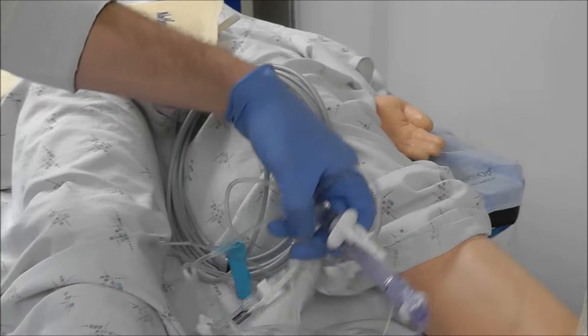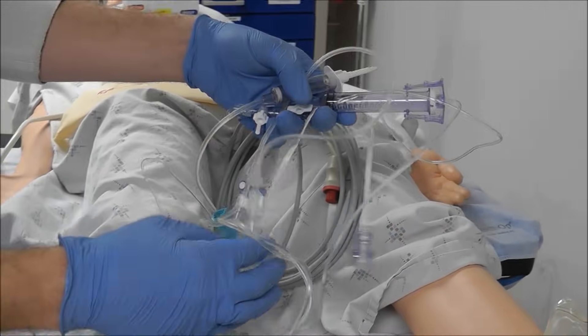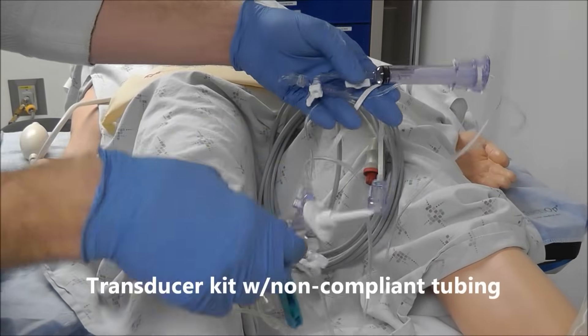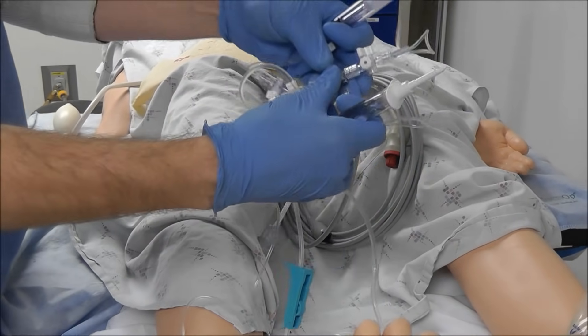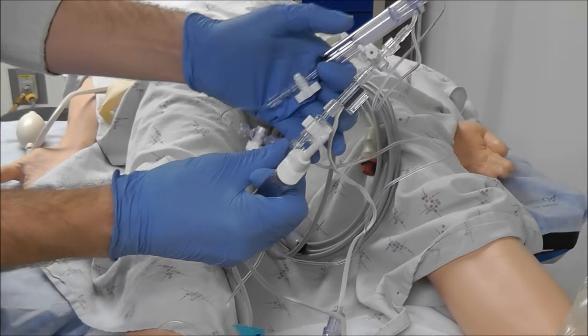The next thing that you're going to need in setting up an arterial line is the actual transducer that is connected to non-compliant tubing. So that's number two.